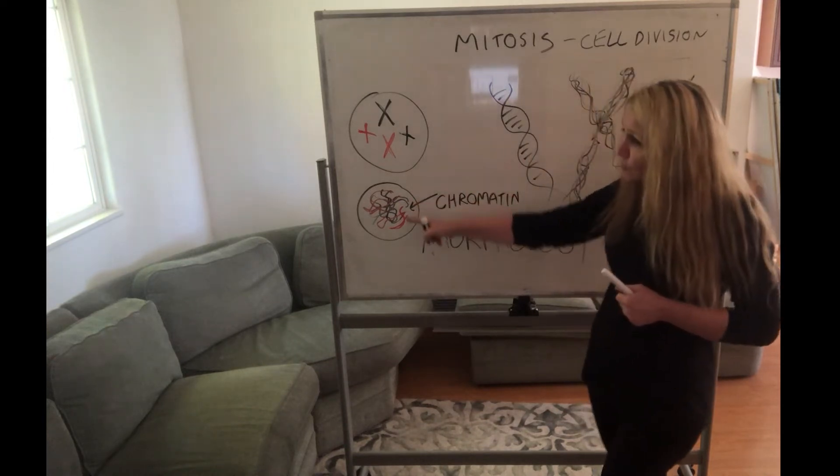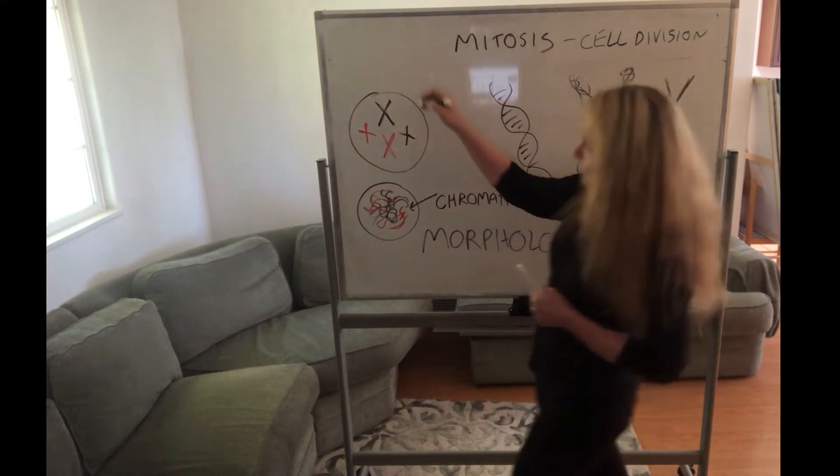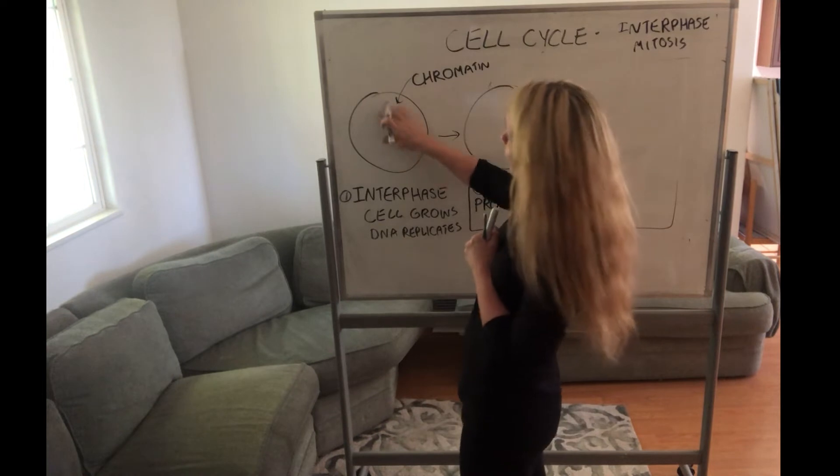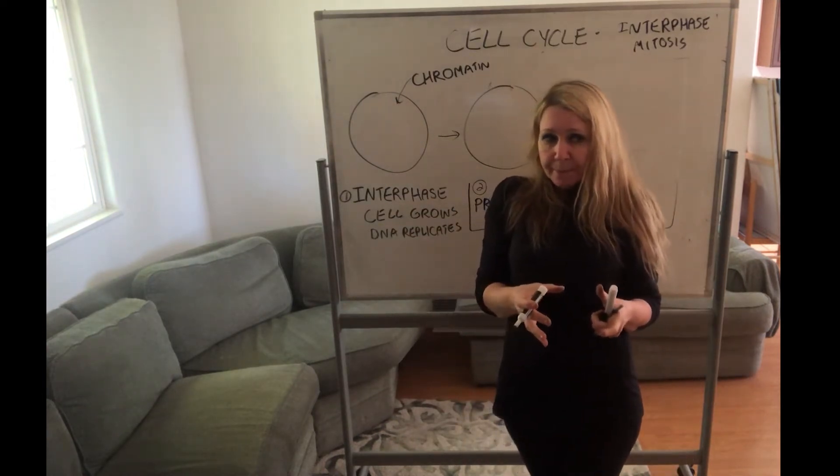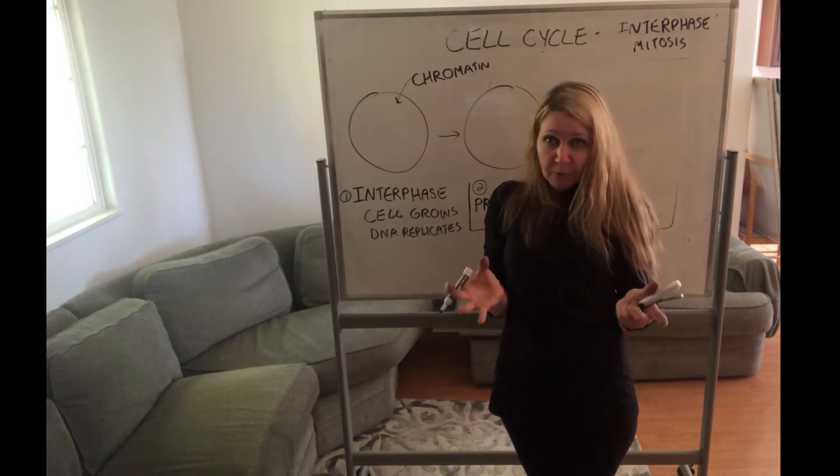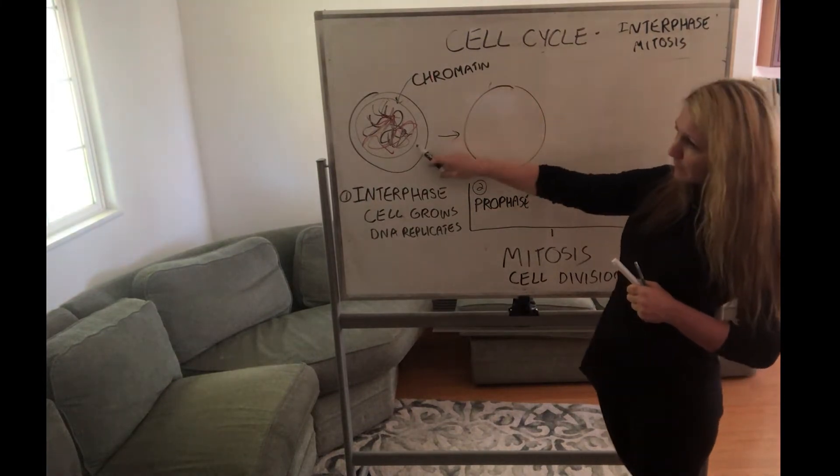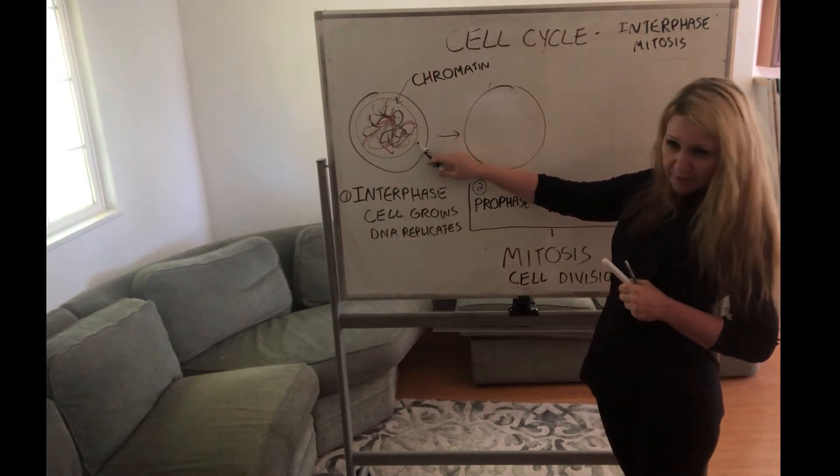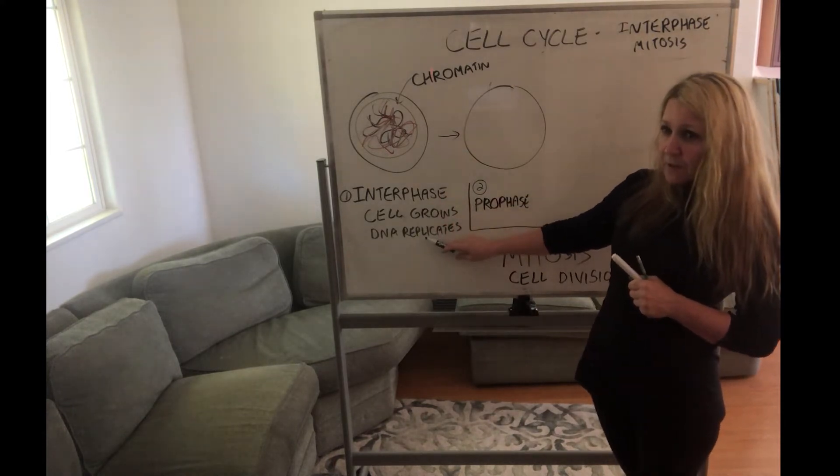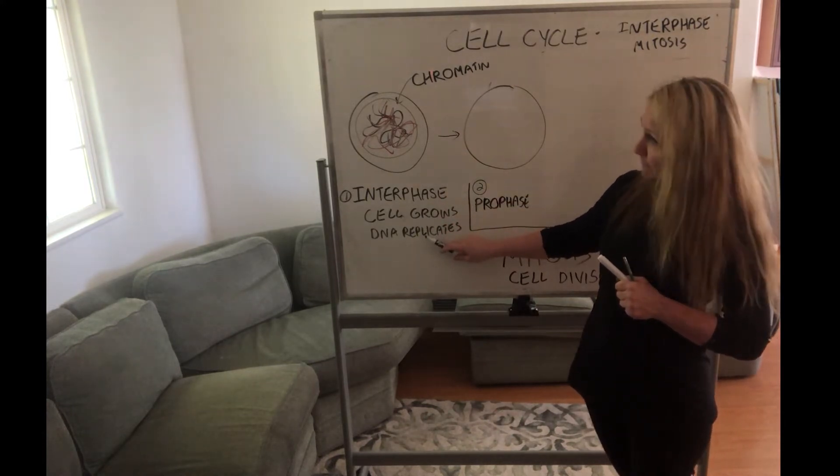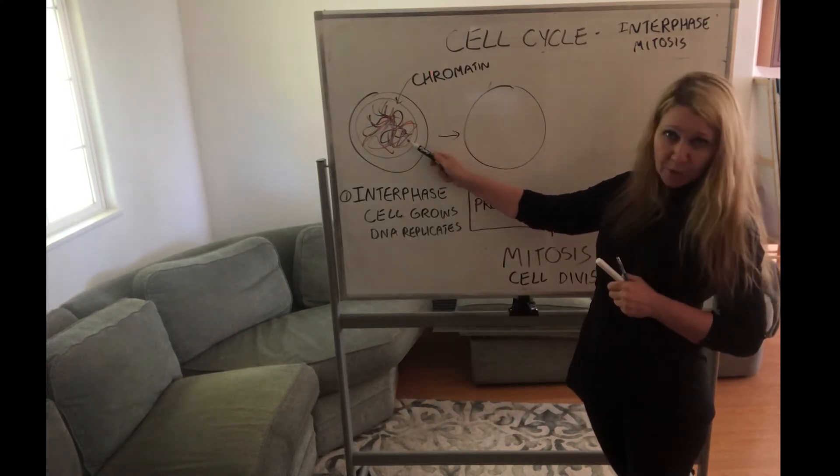So these are chromosomes. Interphase—the DNA looks like a bowl of spaghetti in the form of chromatin. Chromatin is the form that DNA takes in interphase. So interphase is when the cell grows and the DNA starts to replicate. It's getting ready to divide, but you don't see any chromosomes yet.